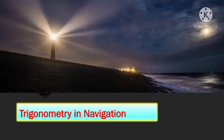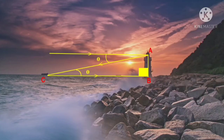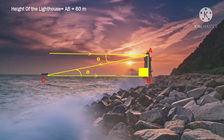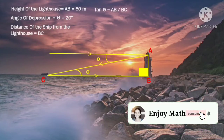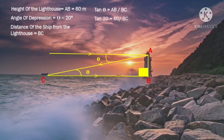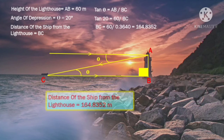The next application of trigonometry is in navigation. Suppose a scenario where you have to measure how far a ship is from a lighthouse. The lighthouse is 60 meters in height, and from it you observe the ship and note the angle of depression as 20 degrees. Let BC be the distance of the ship from the lighthouse. You're getting a right angle triangle, so tan theta is AB upon BC. Substituting the values, BC is 164.83 meters — this is just one of the many ways trigonometry is useful in navigation.